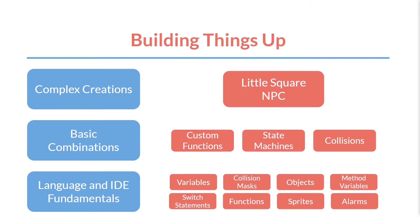For the IDE in GameMaker, it means you have concepts like collision masks, objects, alarms, script assets, and these things get combined into slightly more complicated things like custom functions or state machines, collision code, etc. And that gets combined into even larger things like enemies.